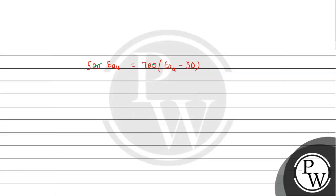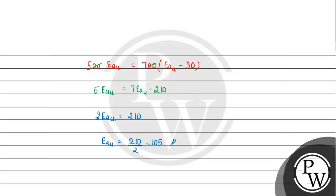Substituting: 5 times the activation energy of the uncatalyzed reaction equals 7 times the activation energy of the uncatalyzed reaction minus 210. Rearranging, 7 minus 5 gives 2, so 2 times the activation energy of the uncatalyzed reaction equals 210. Therefore, the activation energy of the uncatalyzed reaction is 210 divided by 2, which is 105 kilojoule per mole.